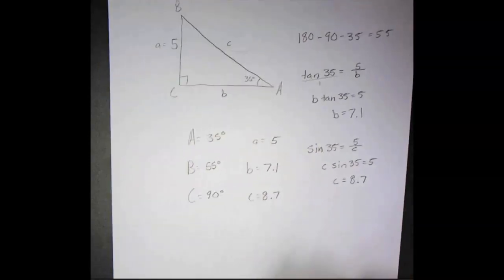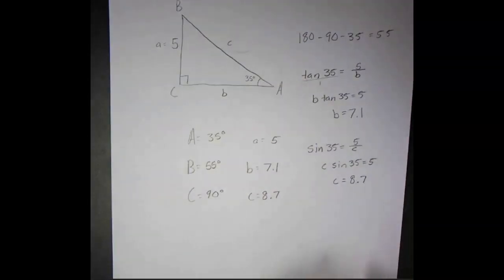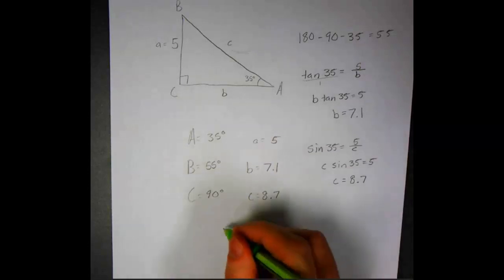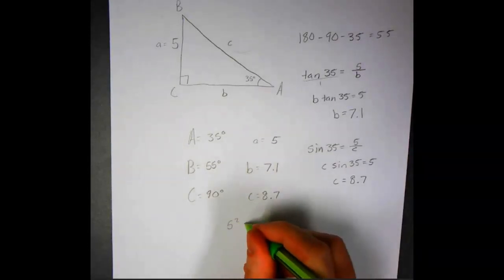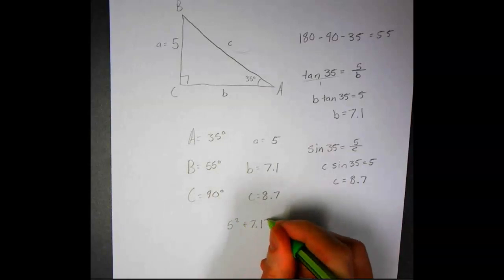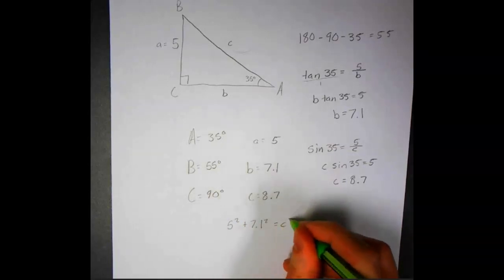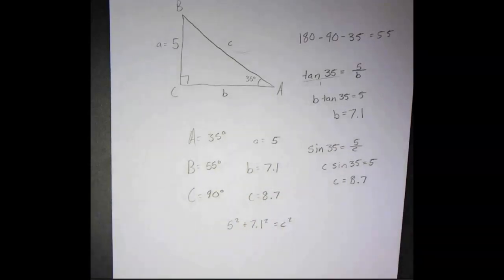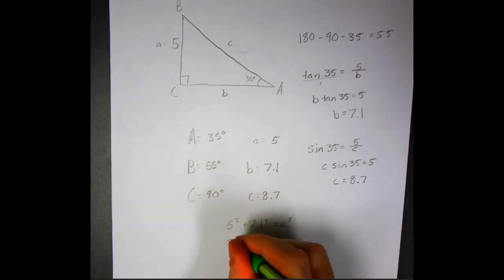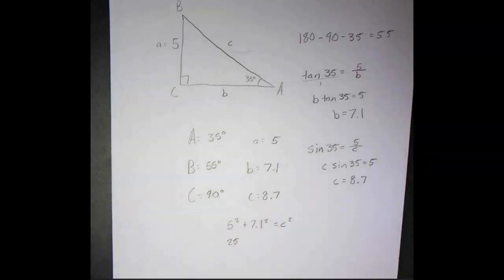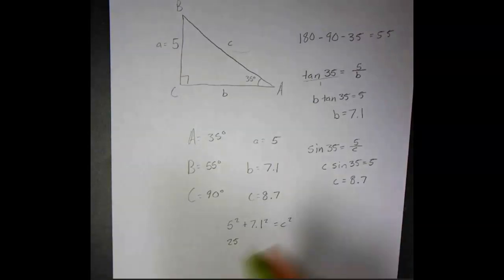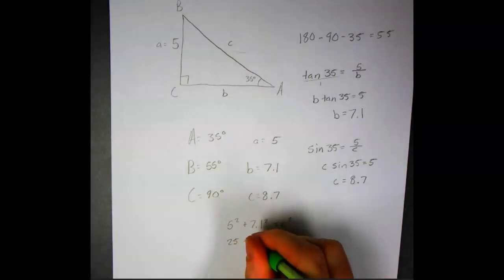To double-check, we can use the Pythagorean theorem. 5 squared plus 7.1 squared equals C squared. 5 squared is 25, and 7.1 squared is 50.41.